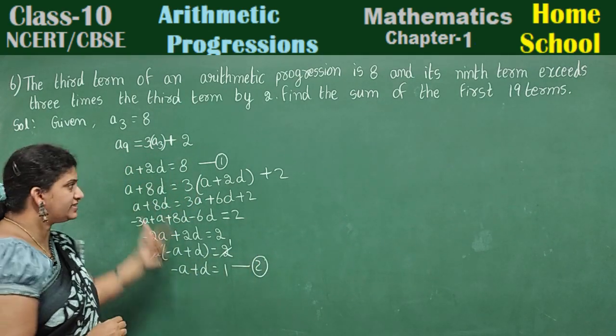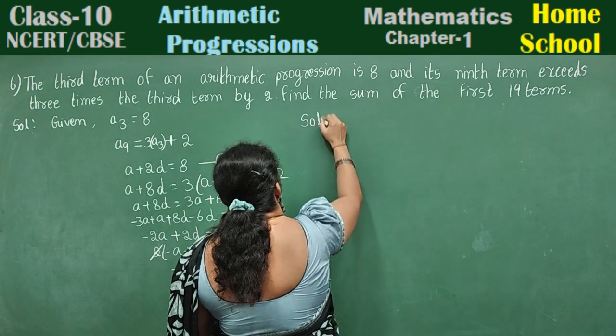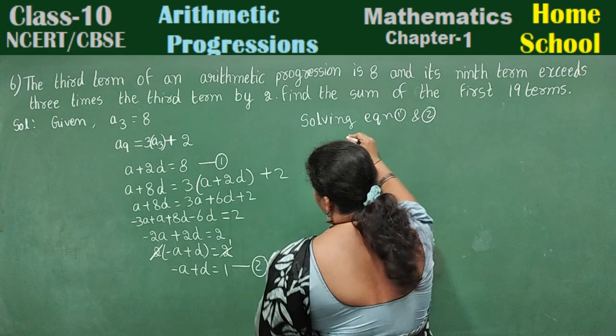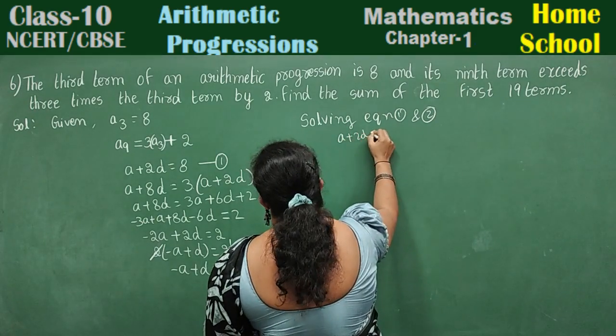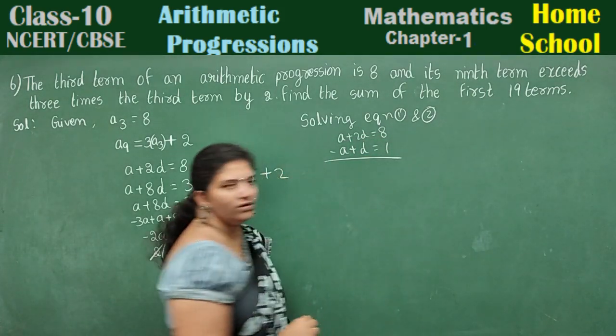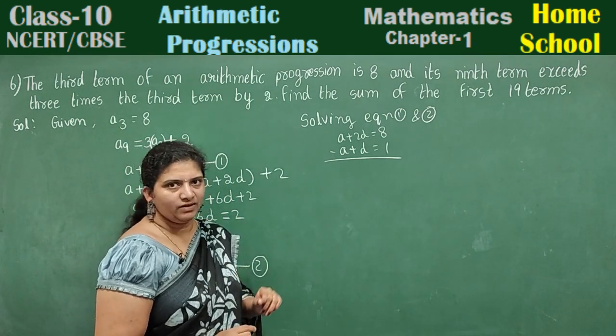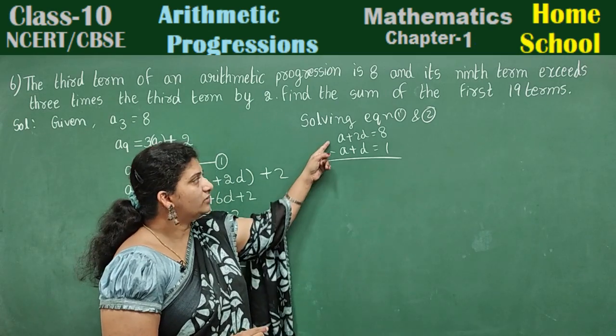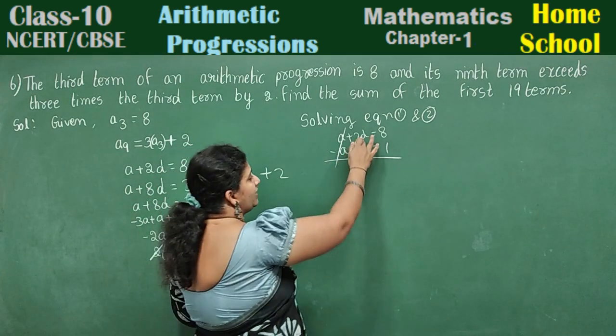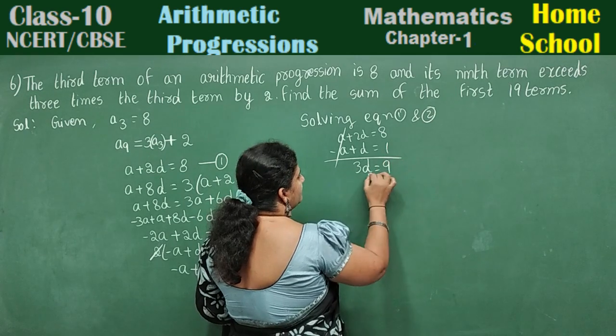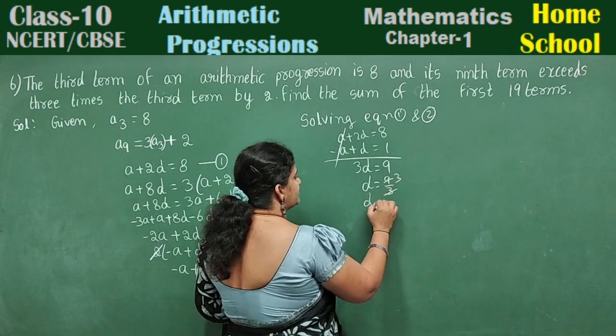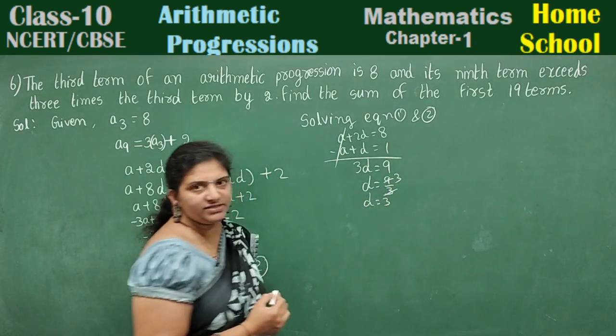Solve these two equations now. Solving equation 1 and 2. Equation 1: A plus 2D is equal to 8. Equation 2: minus A plus D is equal to 1. I want to cancel A. What we need to do? Just add. Plus A minus A will be directly cancelled. 2D plus D will be 3D. 8 plus 1 is 9. D is equal to 9 divided by 3. D is equal to 3. Common difference is 3.